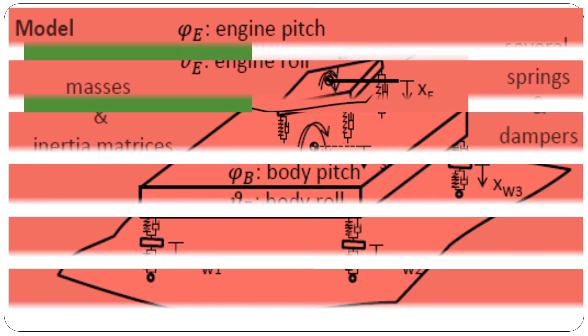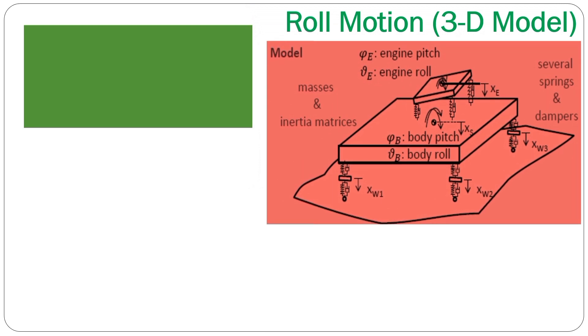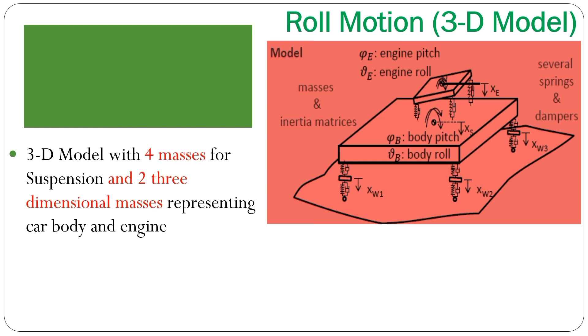We have again several springs and dampers in different positions, but most of the positions, as you can see from the picture, are very similar to the positions that we used previously. As already shown, we have a spatial three-dimensional model with four simple masses, which are representing the suspension system, and we have two three-dimensional masses representing the car body and the engine.